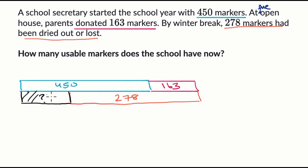And so this piece right over here is what is going to be left over. So we need to figure out this thing that I'm shading in, I guess you could say black. So first we could add 450 to 163 to get this total, and then we could subtract 278. So we're going to do 450 plus 163, plus 163, and then we're going to subtract 278.